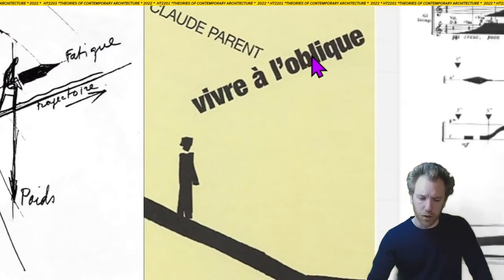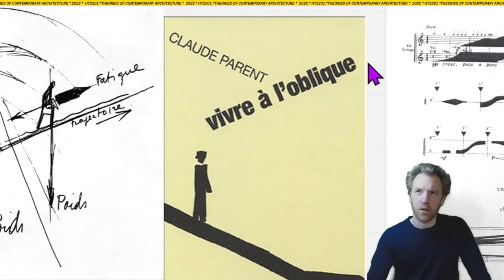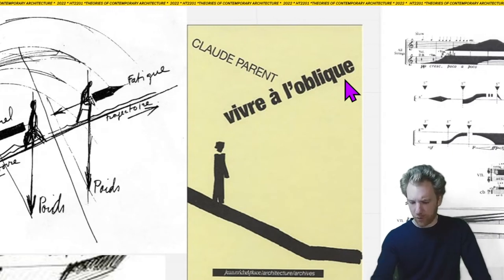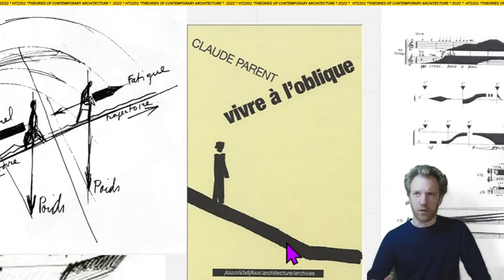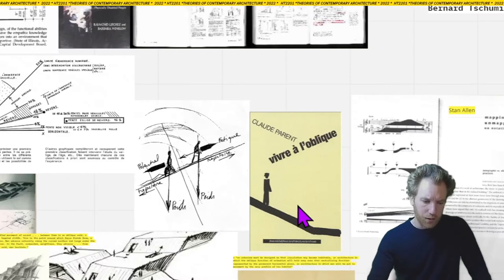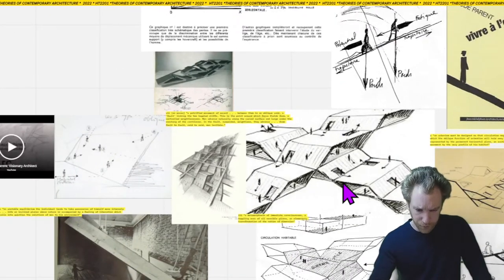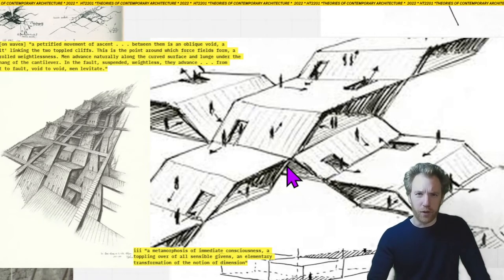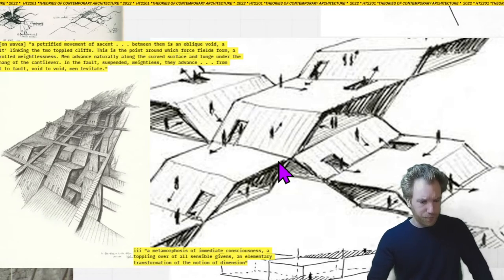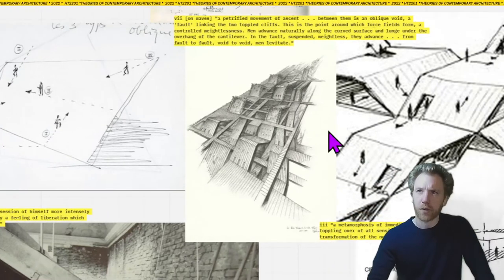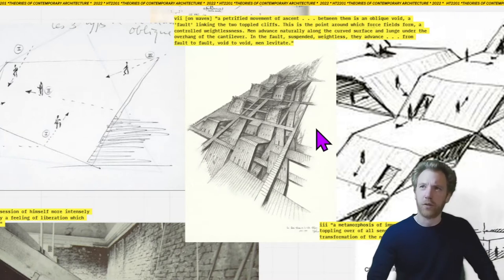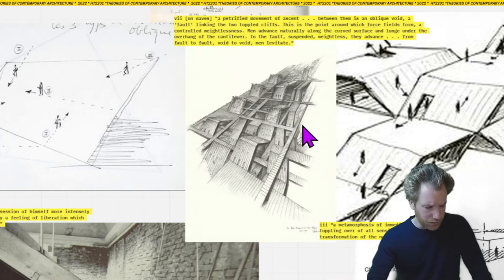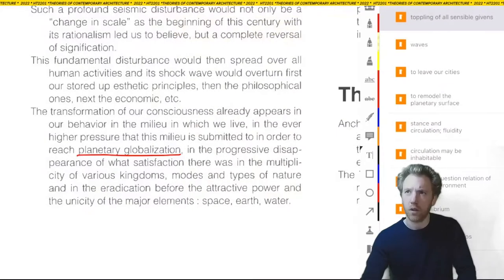Parent's work is defined among other things by the fundamental concept 'vivre en oblique' — to live on the oblique — meaning, as a simple diagram shows, not the horizontal but an inclined plane. Along with the French theorist Paul Virilio, Claude Parent developed an extremely well worked-out idea of what it would mean to live on the oblique and what kind of circulatory system it produces.